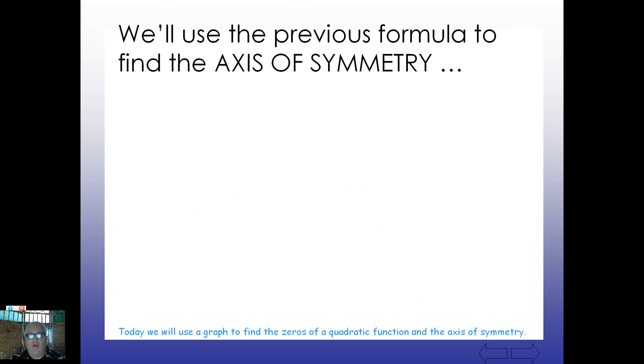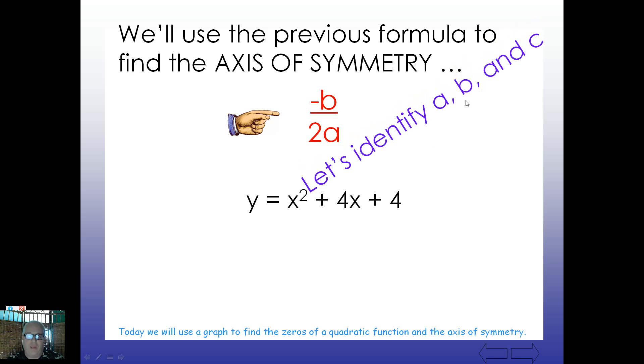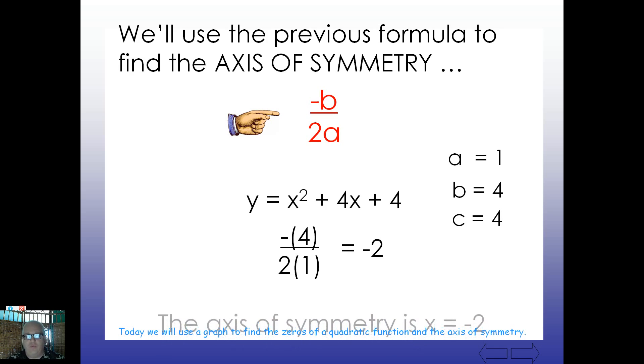Now we're going to apply that right now. We'll use the previous formula to find the axis of symmetry. Negative b over 2a. And we're given this equation here, y equals x squared plus 4x plus 4. So if you look here, it looks like a is going to be the number 1, b is going to be the number 4, and c is also going to be the number 4. So let's identify a, b, and c here formally. a is 1, b is 4, c is 4. Now let's plug in our values into this formula and come up with that x value to find the axis of symmetry. I'm going to take the opposite of b over 2 times a. What's the value for a? 1. What's negative 4 divided by 2? It's negative 2. So this axis of symmetry would cut right down the middle of the graph at negative 2.